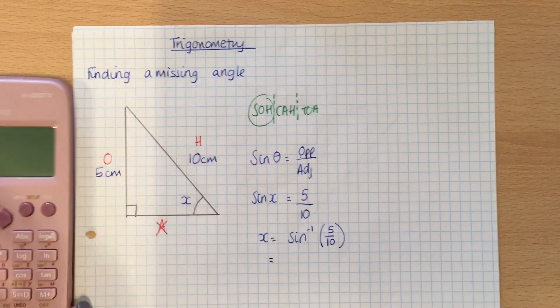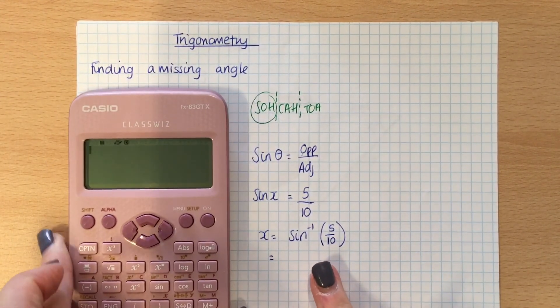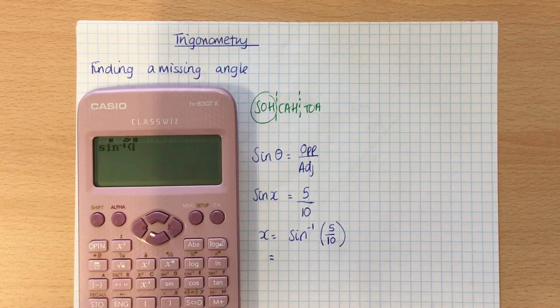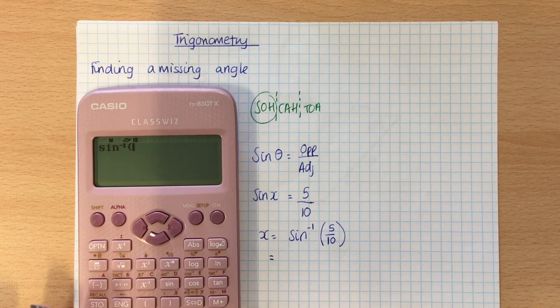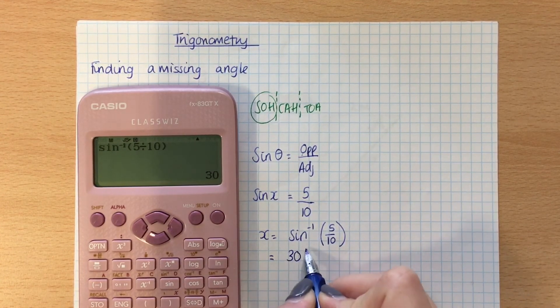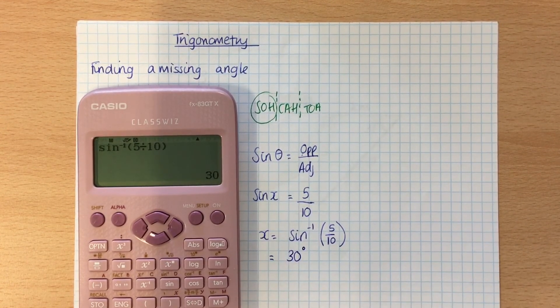So, all I need to do now, is in my calculator, type in exactly what I've got here. So, I have to use shift and sine, that brings up the sine to the minus 1, it automatically opens a bracket for me, and then I do 5 divided by 10, close my bracket, and it'll give me the answer of 30. And remember, it's an angle, so it's 30 degrees.